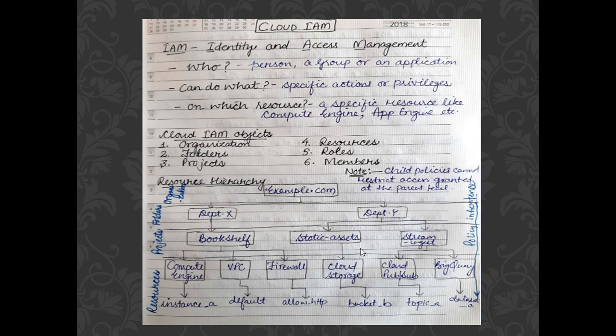Folders are further divided into smaller entities called projects. Department X deals with some work, and I've provided 'Bookshelf' as an example project under it. Folders are divided into projects — Department X is the parent of Bookshelf. Bookshelf can deal with multiple resources provided by Google Cloud Platform: they may be dealing with Compute Engine, networking facilities, or firewall rules. So projects are further divided into resources.